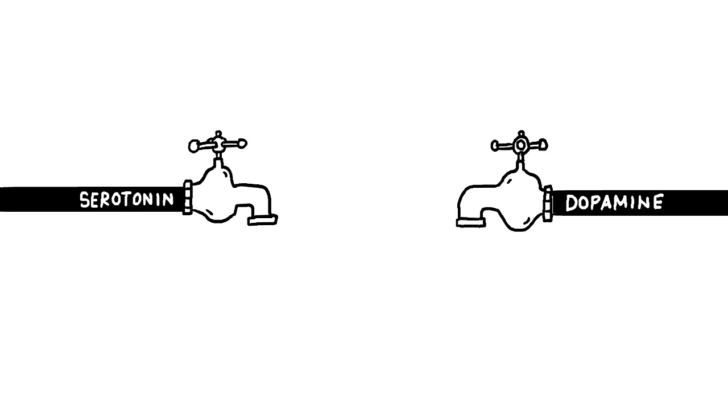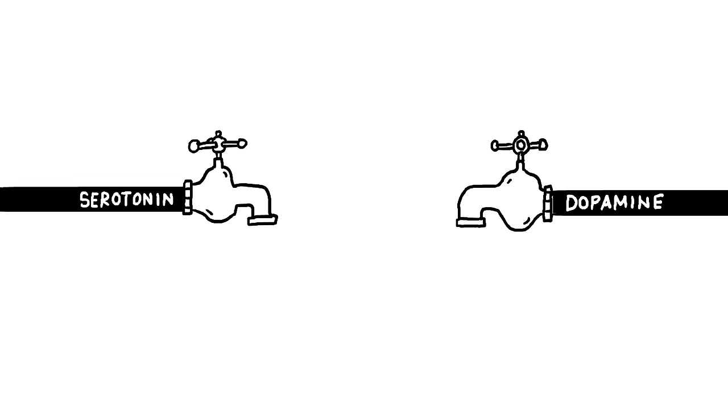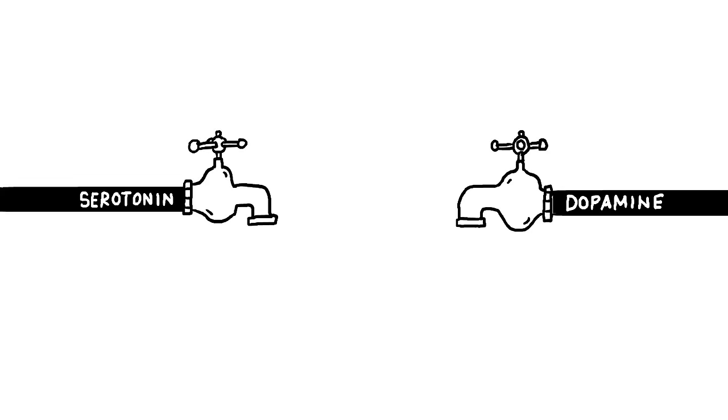For example, ECT triggers the release of certain neurotransmitters, molecules that help carry signals between neurons and influence mental health. ECT also stimulates the flow of hormones that may help reduce symptoms of depression.